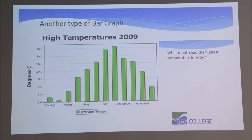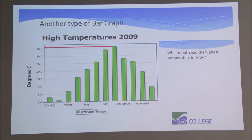We need to use previous knowledge to fill in gaps — for example, the month between January and March would be February. To read this graph, we find the column of interest — in this case, the months — and look at the corresponding number. If we look at July and follow it to the left where we have degrees Celsius, we see it's a little more than 35. Since each interval is 5 apart — 0, 5, 10, up to 35 — this bar is slightly above 35, so I'd estimate the average temperature for July at about 36 degrees.